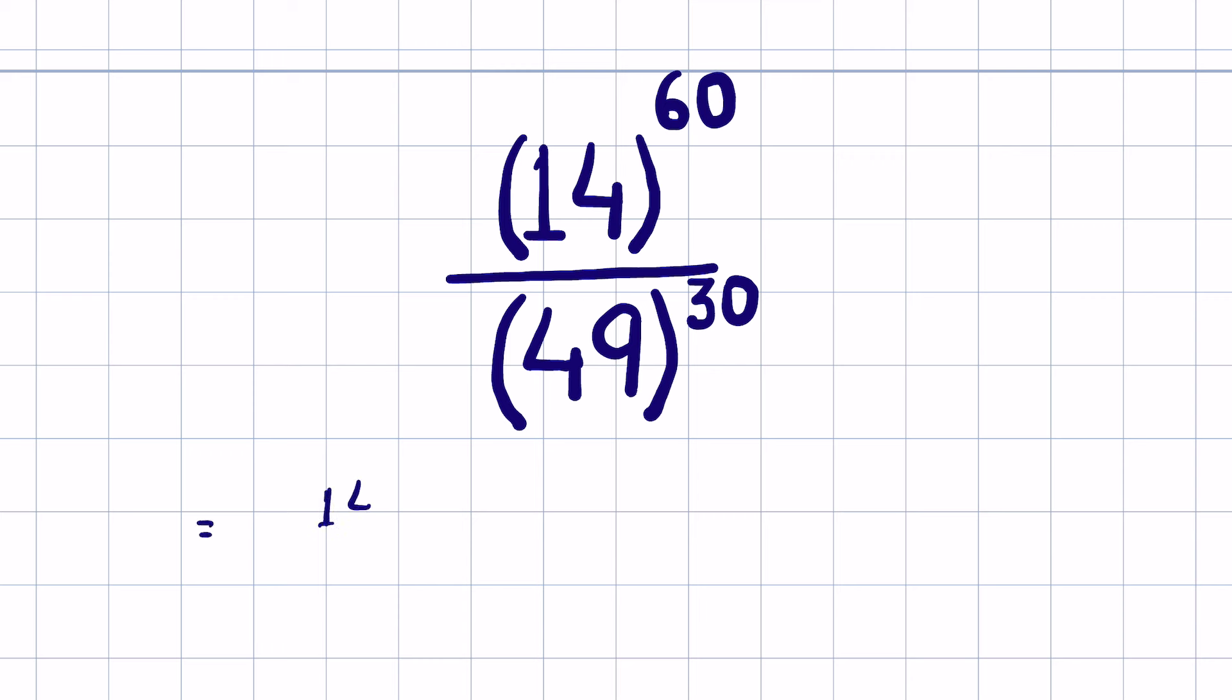So 14 raised to the power 60 and 49 we can write it as 7 square raised to the power 30.